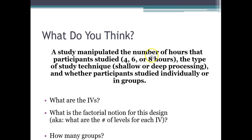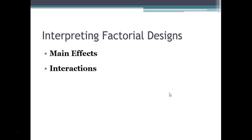For example: a study manipulates number of hours studied — four, six, or eight hours — type of study technique — shallow or deep processing — and whether participants studied individually or in groups. The independent variables are hours studying, study technique, and individual versus group study. The factorial notation is three-by-two-by-two, giving twelve groups.